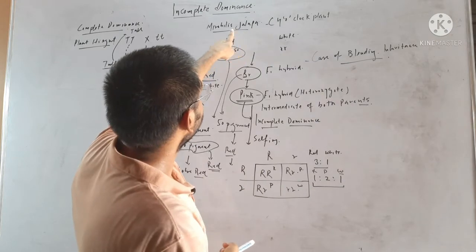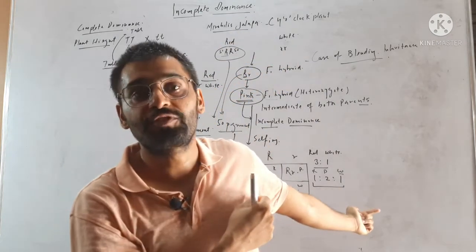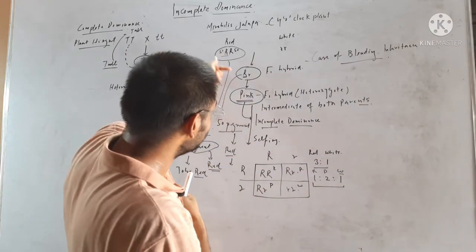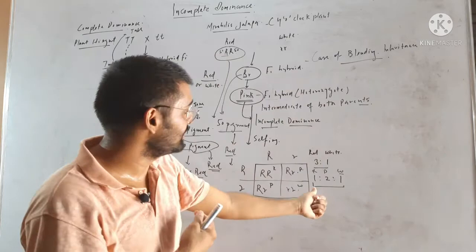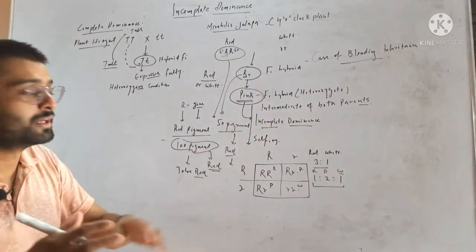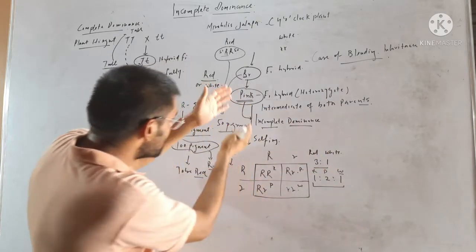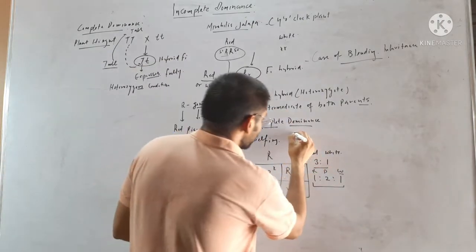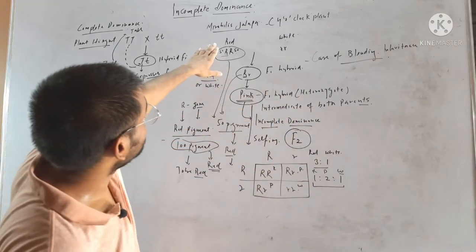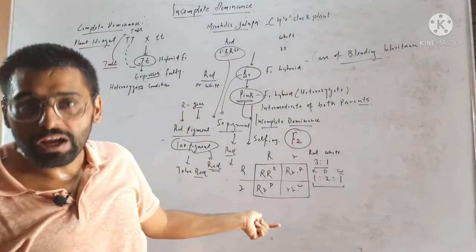From this ratio, you can see that the factors that disappeared during F1 reappeared in F2. The character of red flower disappeared in F1, but it appeared back in F2. That means the factors were discrete — they were not diluted. So it looks like a case of blending inheritance, but it is not.